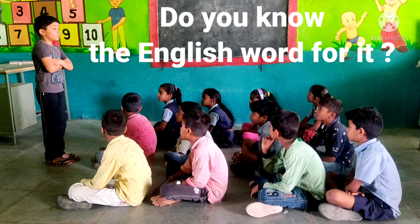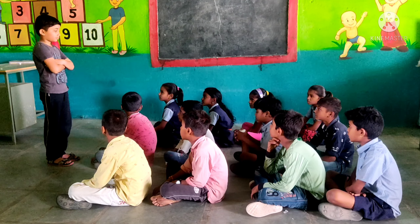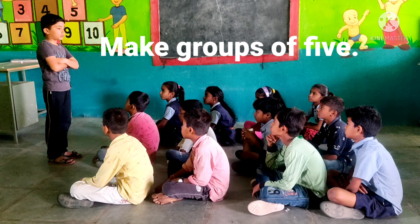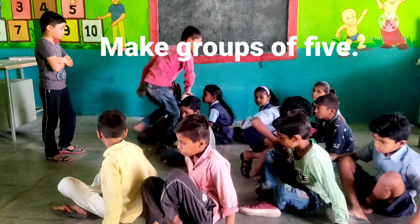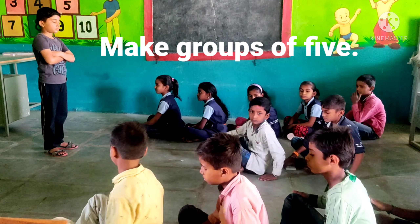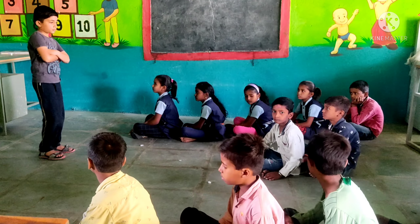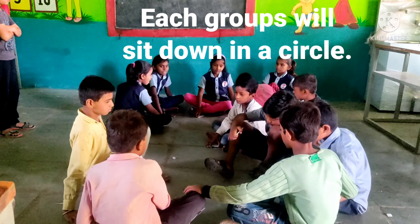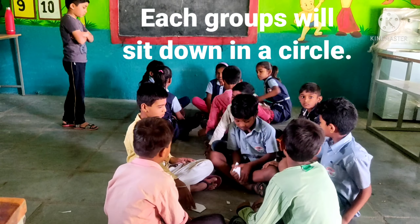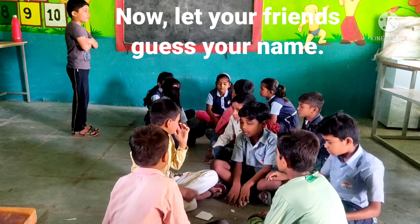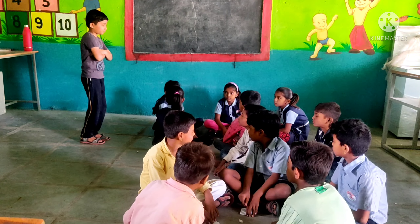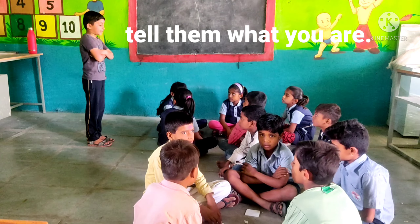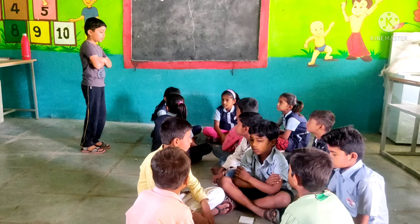It's a fruit. Do you know the English word for it? Yes. Good. Now guess your name. Make groups of five. It's a good group of children in a circle. Now let your friends guess your name. If they can't, show your card and tell them what you are. Ready? Yes. Start.